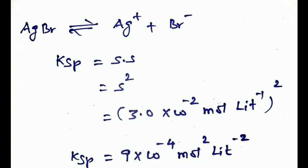Therefore, Ksp equals S squared equals (3.0×10⁻²)² mol²/L². Calculating: 3² = 9 and (10⁻²)² = 10⁻⁴. Therefore, the solubility product Ksp equals 9×10⁻⁴ mol² L⁻².